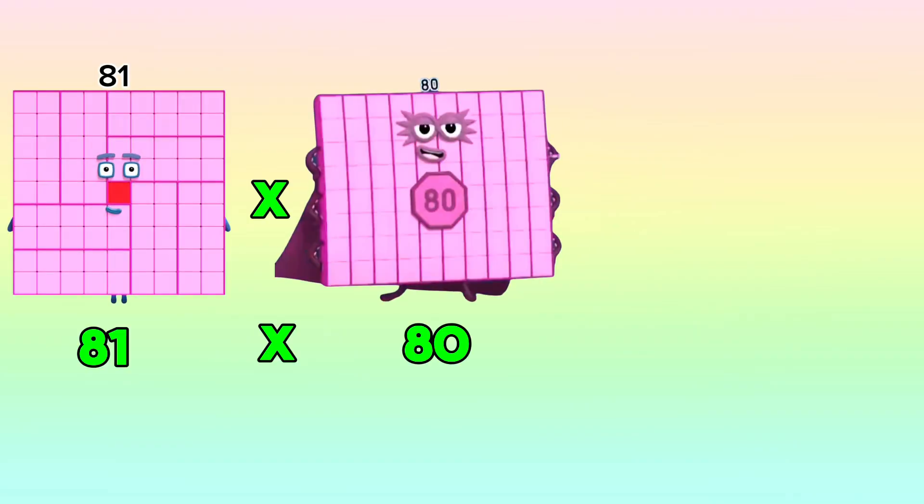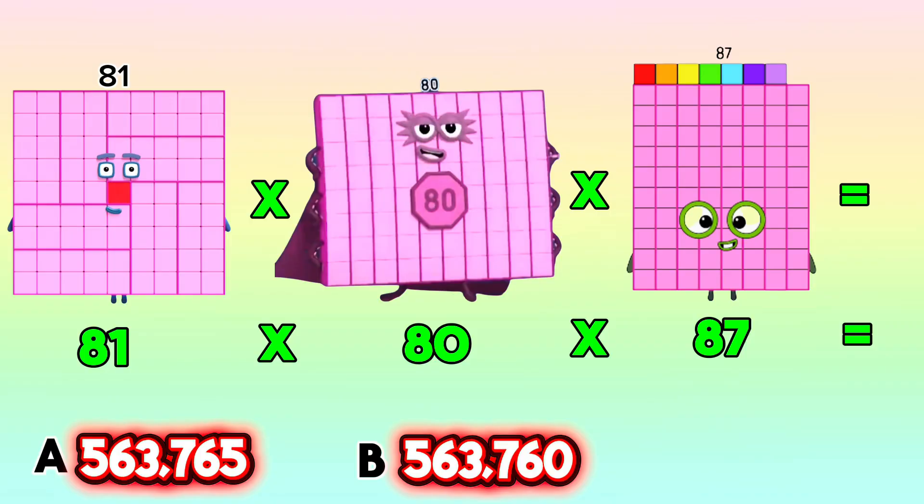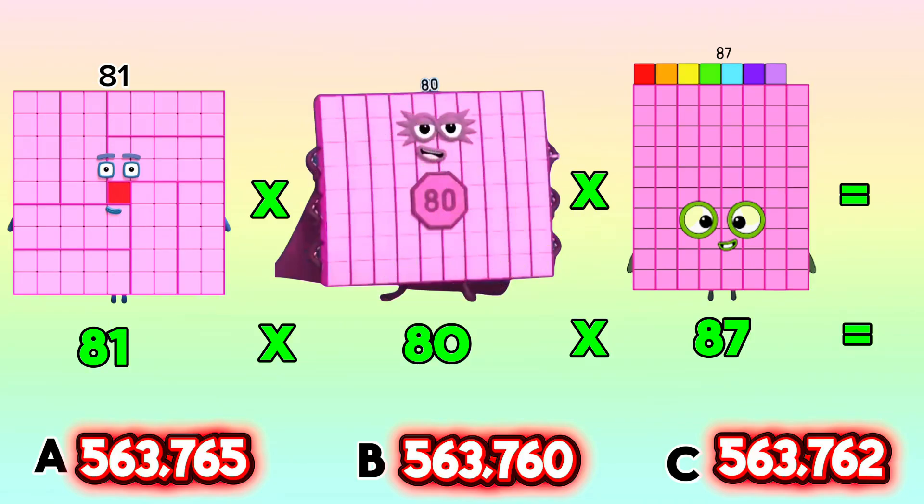Question number 3. 81 times 80 times 87 equals: A, 563,765. B, 563,760? Or is it letter C, 563,762? If your answer is letter B, then you are right, 563,760.